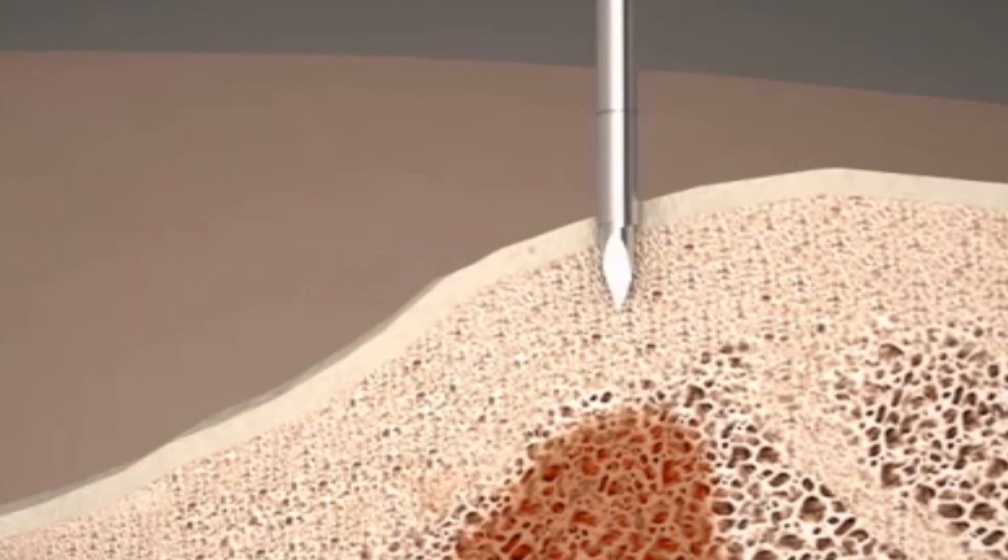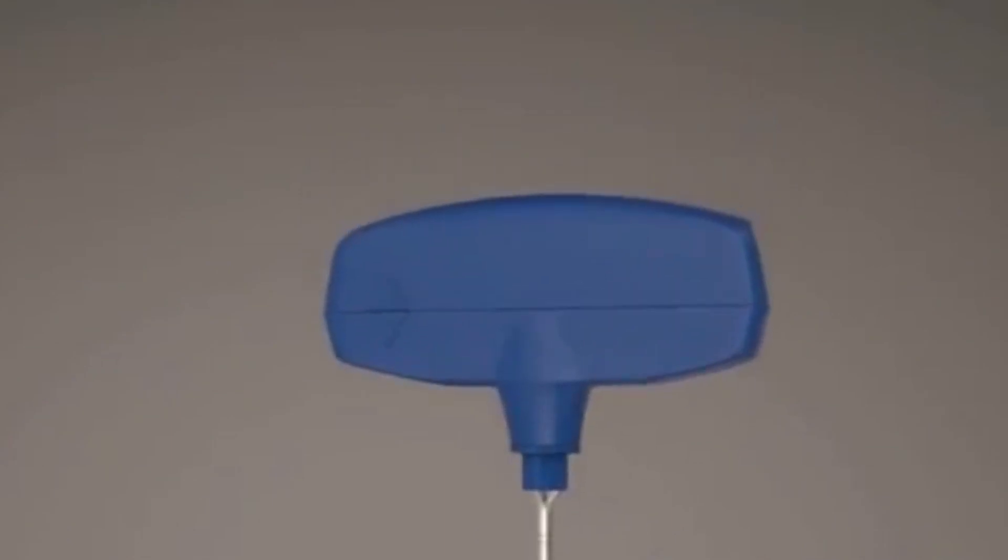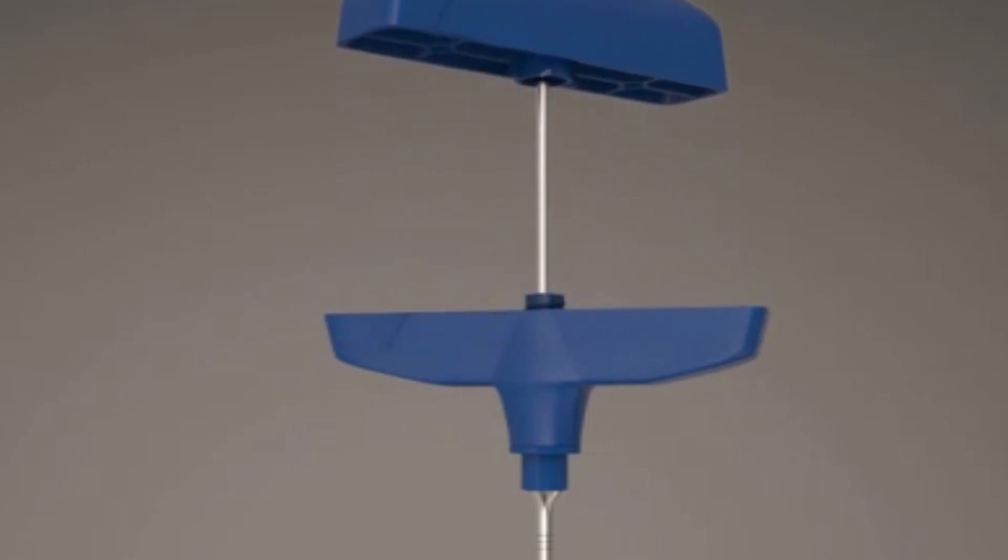Here, if desired, the trocar tip stylet may be exchanged for the drill without losing your place in the bone. To switch to the drill, the handle of the introducer is unlocked by holding the base half, unsnapping the top segment, and withdrawing the trocar tip stylet.